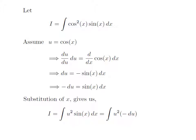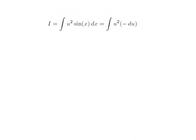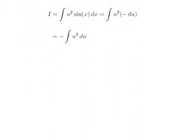Substituting cosine of x into integration i by our assumed value, the integration i has become integration of square of u into sine of x into differential of x. As sine of x into differential of x is equal to minus differential of u, substituting sine of x into differential of x with minus of differential of u, we got i is equal to integration of square of u into minus of differential of u.